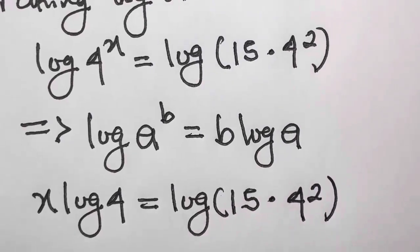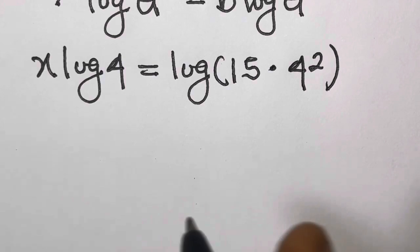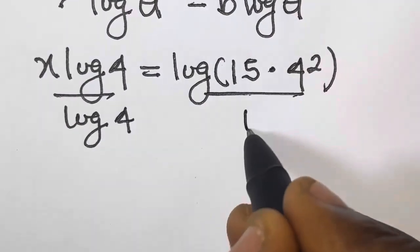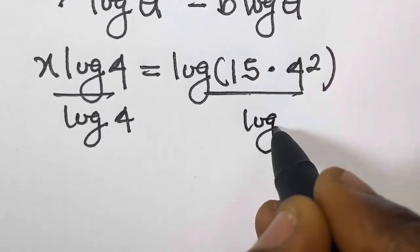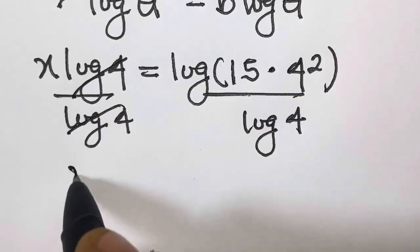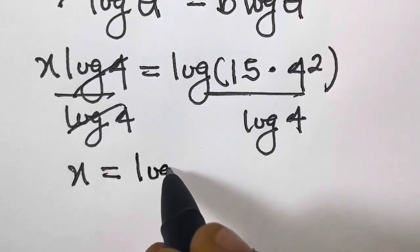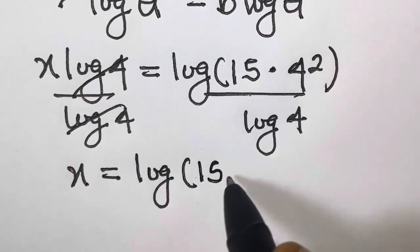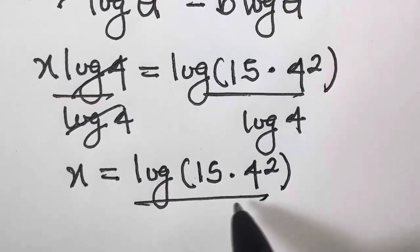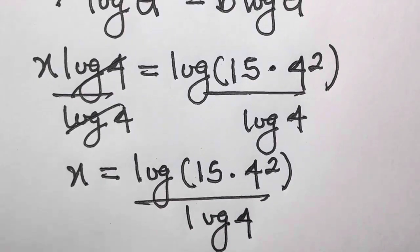So here, we can easily divide both sides by log 4. We cancel log 4 on the left, so we have x equals log of 15 times 4 raised to the power 2, divided by log 4.